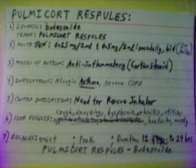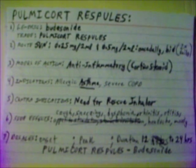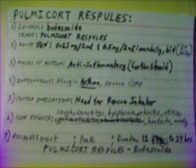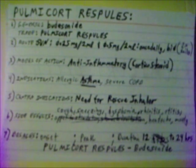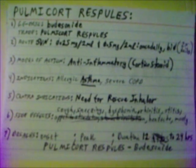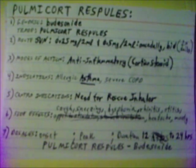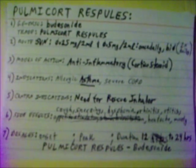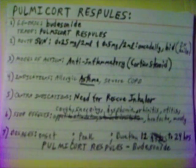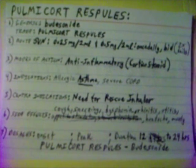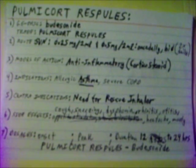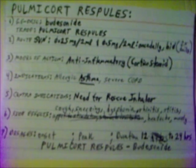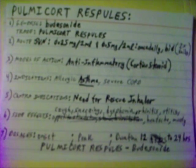Pulmicort Respules. Generic name: Budesonide — B-U-D-E-S-O-N-I-D-E. Trade name: Pulmicort Respules. Given by small volume nebulizer in dosages of 0.25 mg per 2 mL or 0.5 mg per 2 mL, once daily or BID — twice daily.